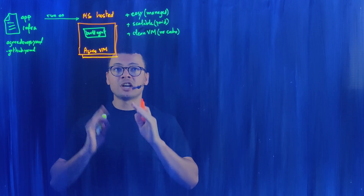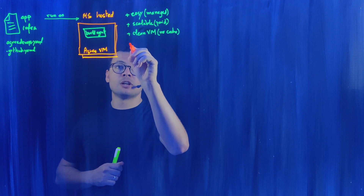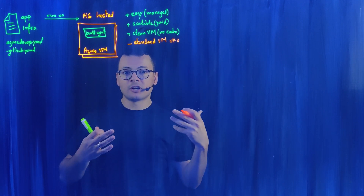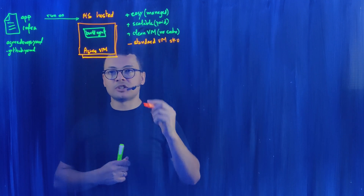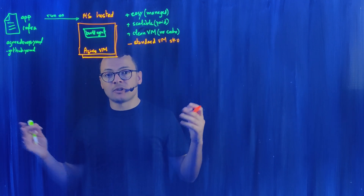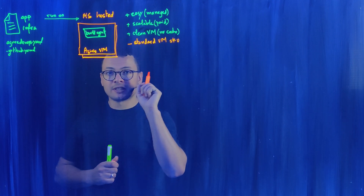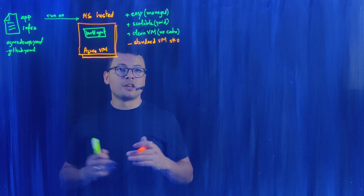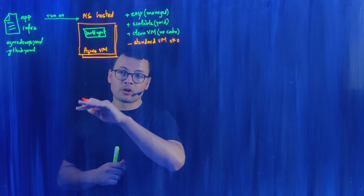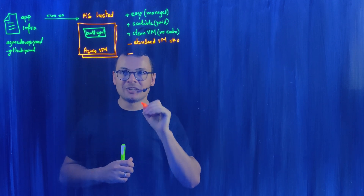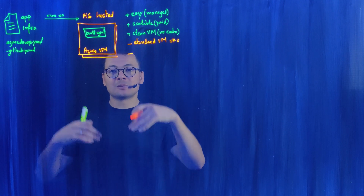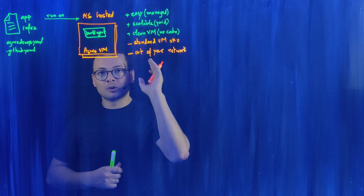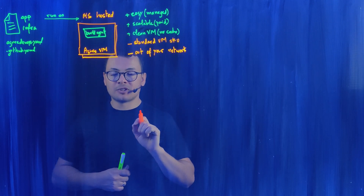However, there are two major challenges. First, this Azure virtual machine uses a standard VM SKU — general-purpose D-series machines in Azure — which suits about 90% of customers. But customers who need something specific, like GPU or a specific hardware architecture, will need a dedicated virtual machine. The second major disadvantage is that this VM is managed by Microsoft, so it's within the Microsoft network, outside your own network, meaning you don't have control over it.